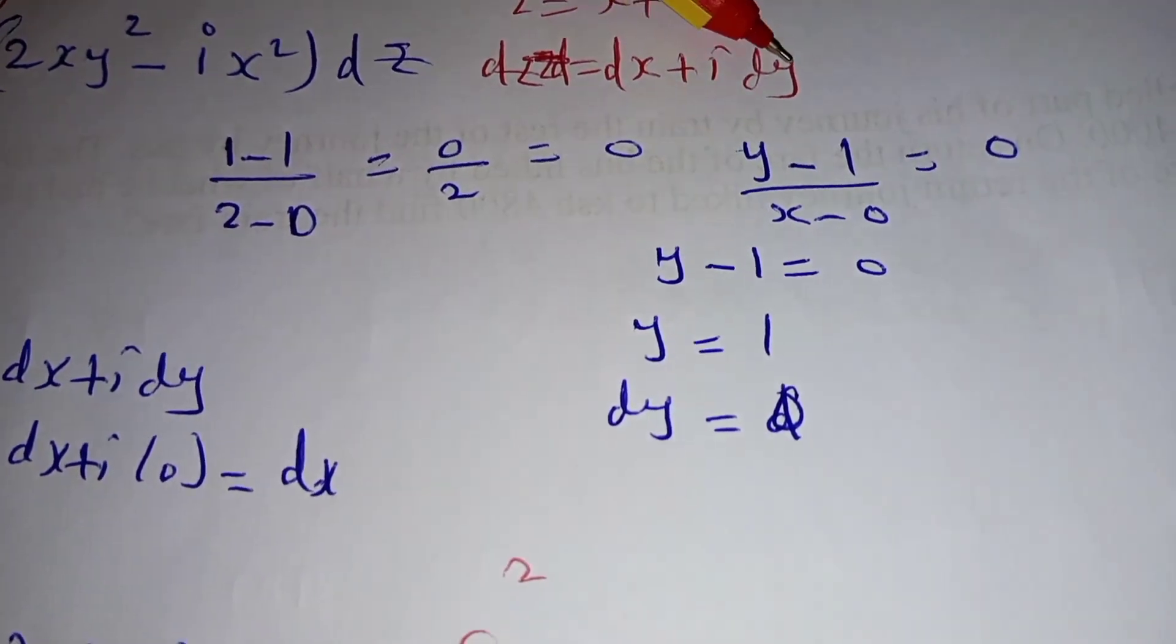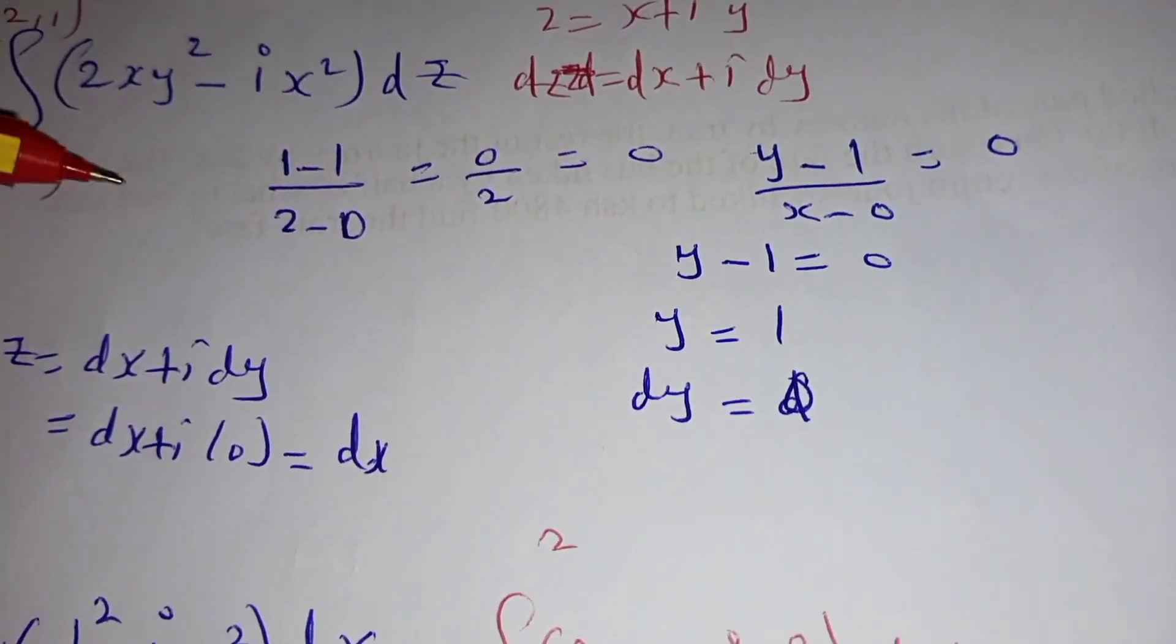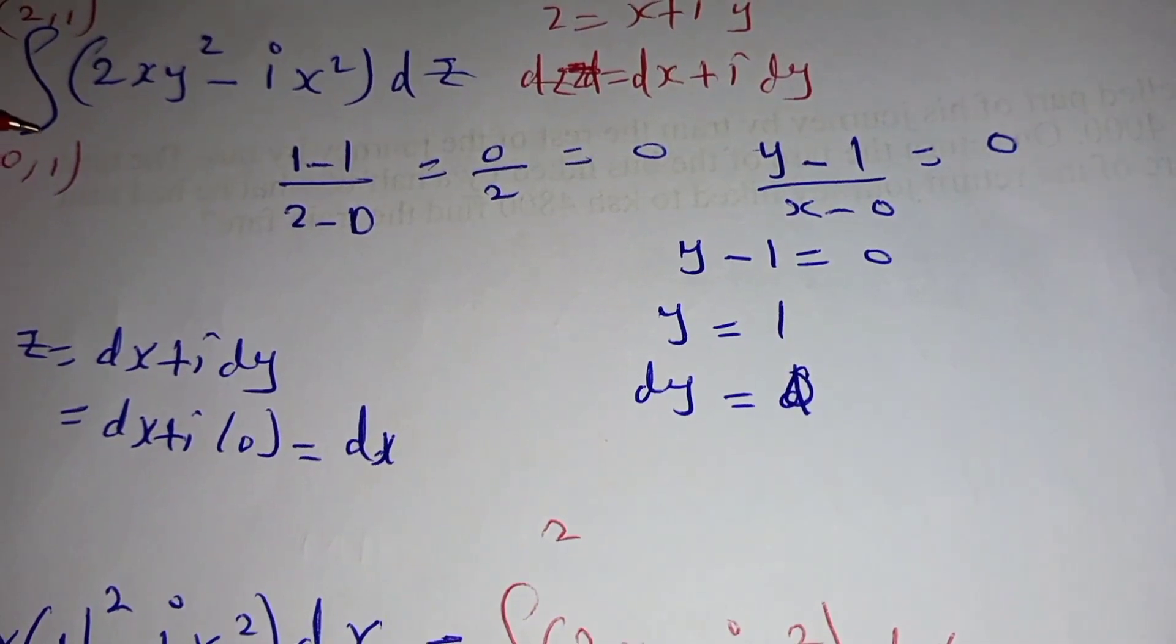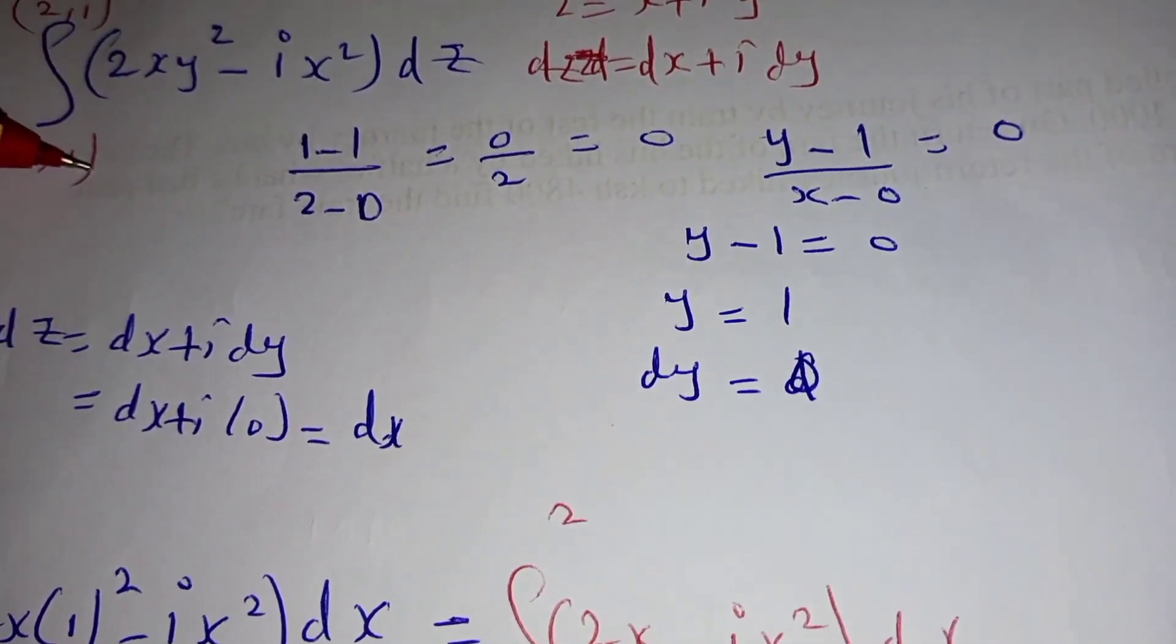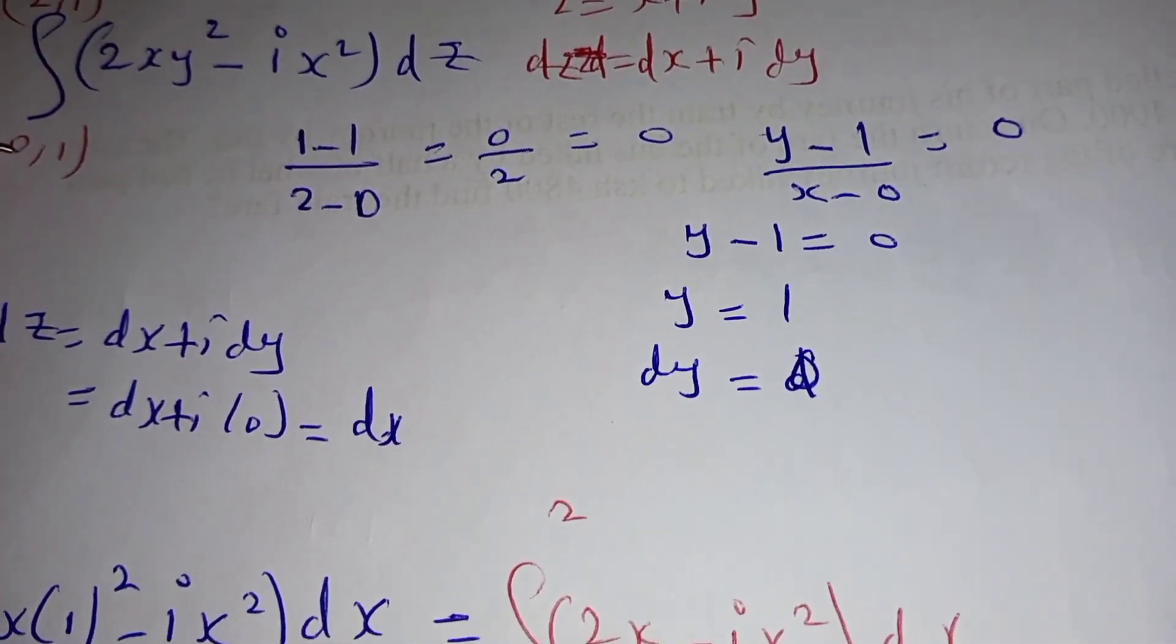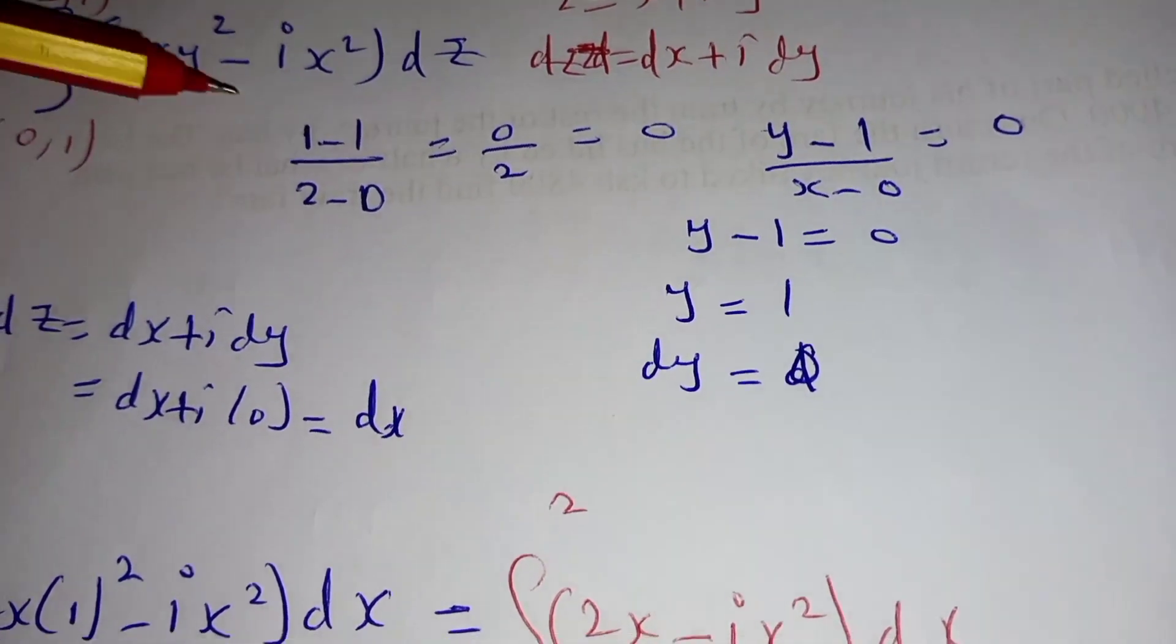Then we obtain the line from this point. We have point (1,1) for y and for x we have (0,2), so 1 minus 1 is 0.